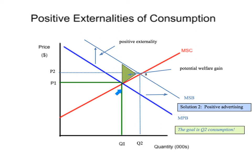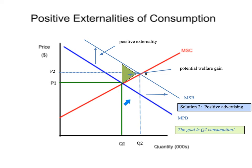Here is another possible solution, and you'll notice there's been a different shift. Solution two is positive advertising. The goal is Q2, and they want to figure out how to get to the socially optimal point of consumption at Q2. The government can create an advertising campaign that would induce more people to get healthier. As a result, the marginal private benefit curve shifts outward, with more private people consuming healthcare, taking advantage of this green triangle, which is the potential welfare gain. These are solutions you could offer in your evaluation section for paper one questions on positive externalities of consumption.